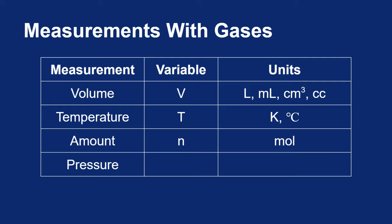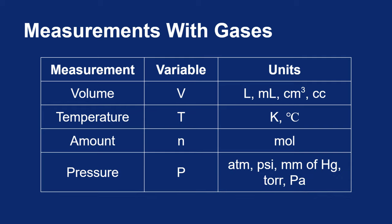The one we haven't talked about is pressure. Pressure will have a capital P in an equation. And there are all sorts of units for pressure. There are atm, which means atmospheres, psi, pounds per square inch, mm of Hg, that's millimeters of mercury, TOR is another unit, and then PA is short for Pascal. Pascal is the SI unit of pressure, but we actually don't use it very much in this class. We're going to focus on atmospheres, mm of Hg, and TOR.